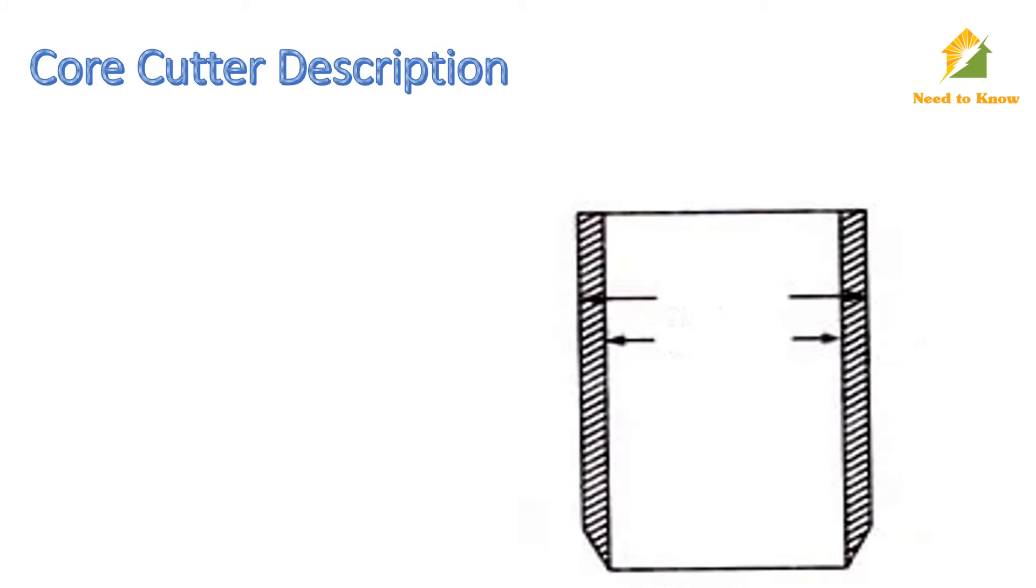Apparatus of Core Cutter Method consists of cylindrical core made of seamless steel having one threaded end and one sharp end. Internal diameter of the cylindrical core is 100 mm and the external diameter is 105 mm. Height is 130 mm.